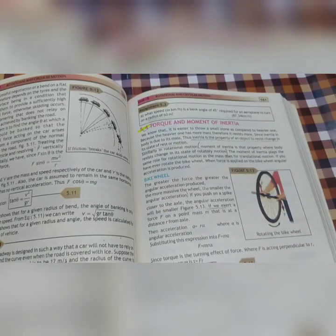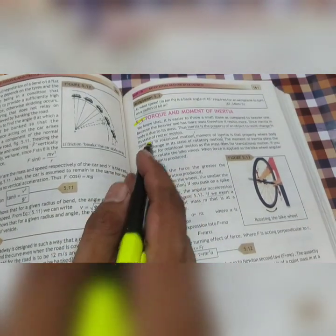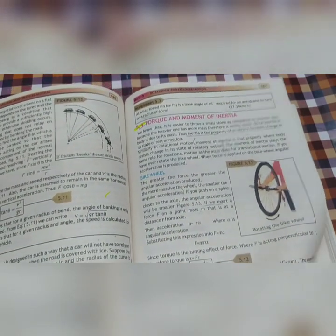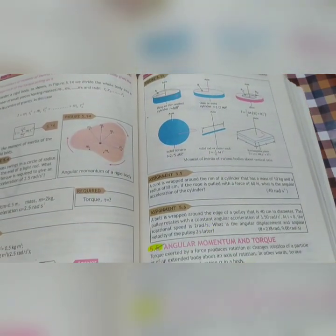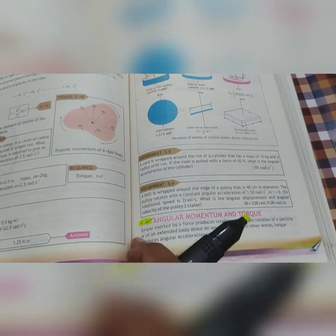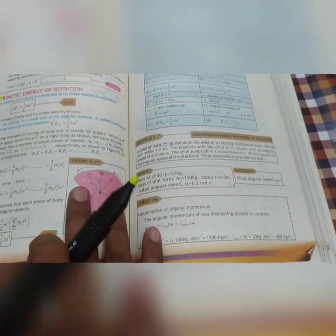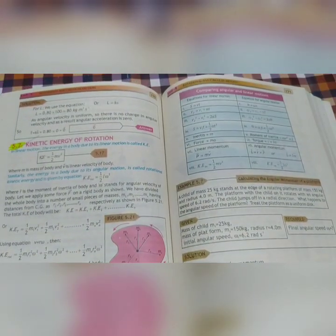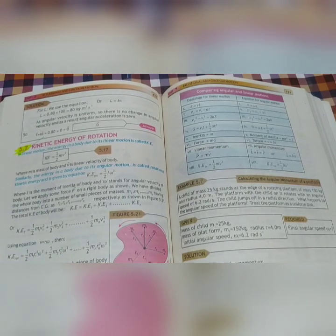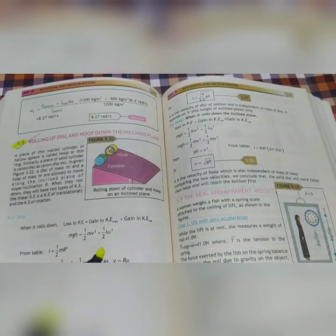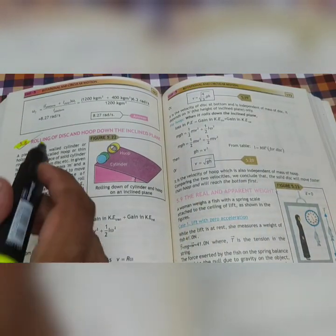Then you have Torque and Moment of Inertia, page 161. Then you have Angular Momentum and Torque, very important, you have to prepare. Topic 5.7, Page Number 170. And you have velocity for discs and hoop.